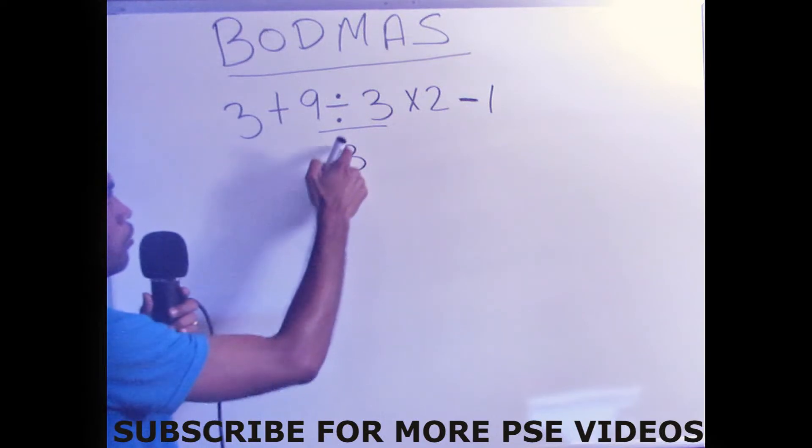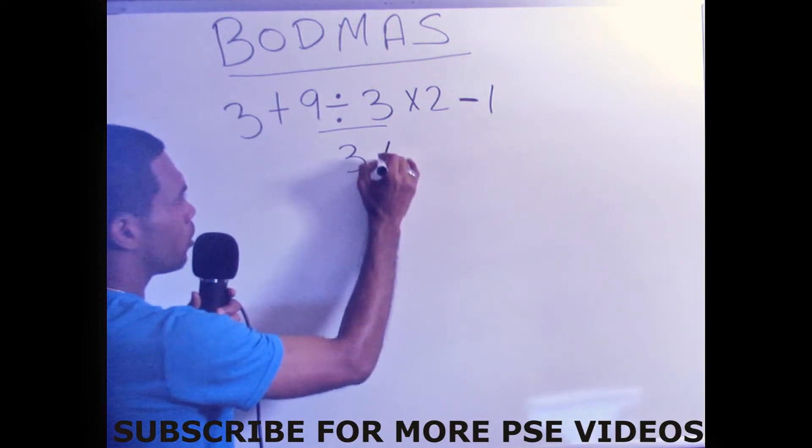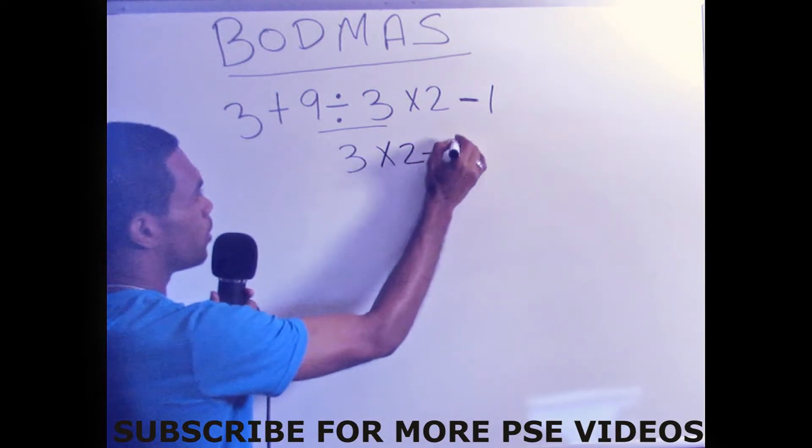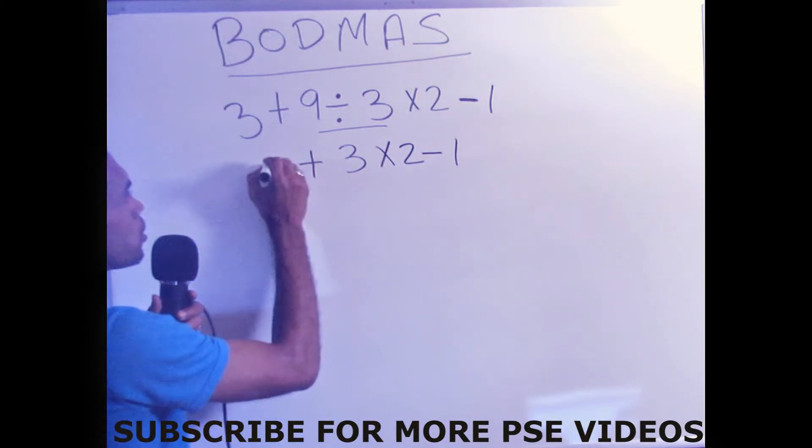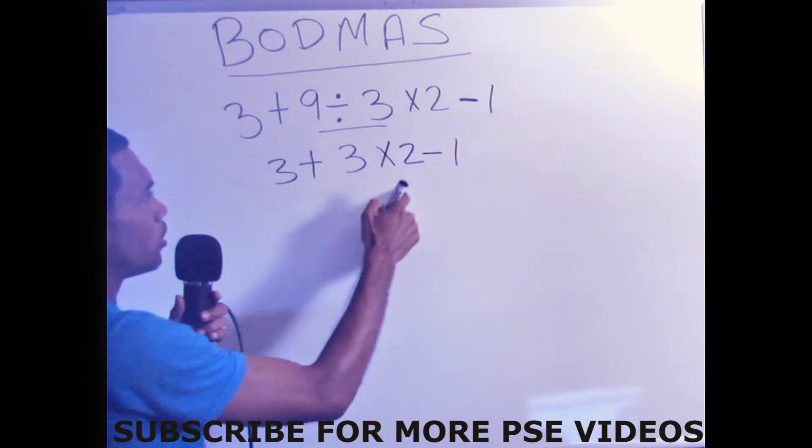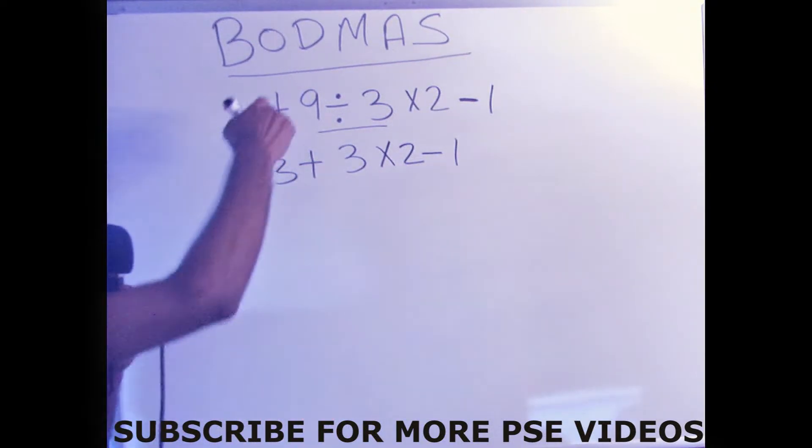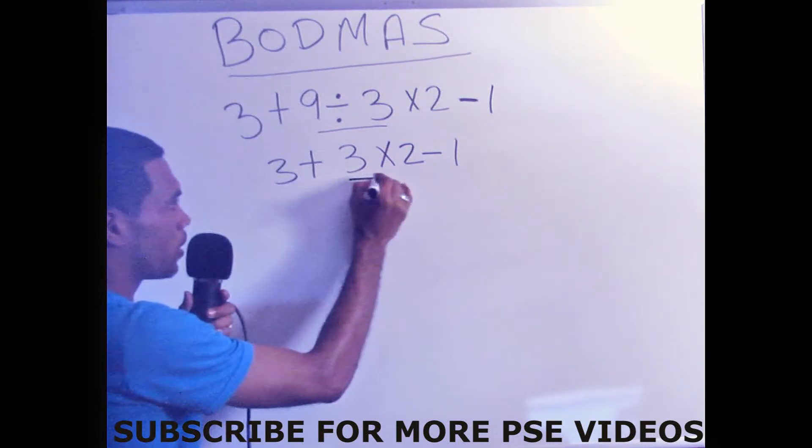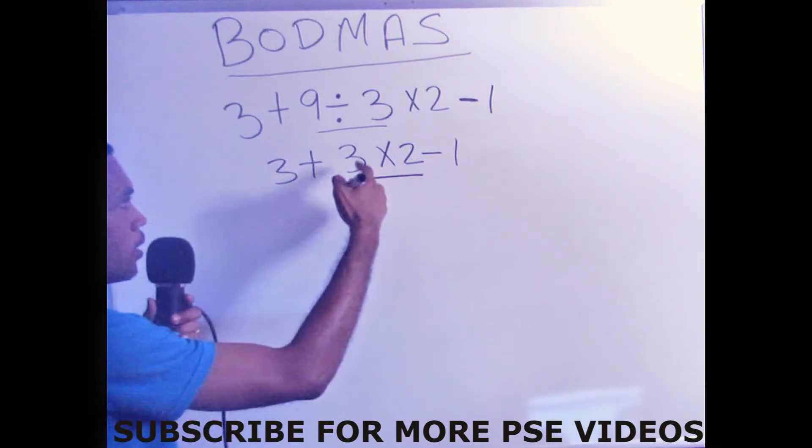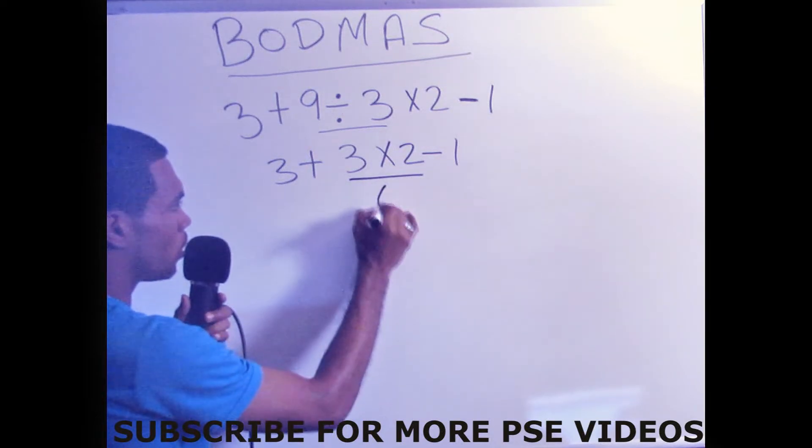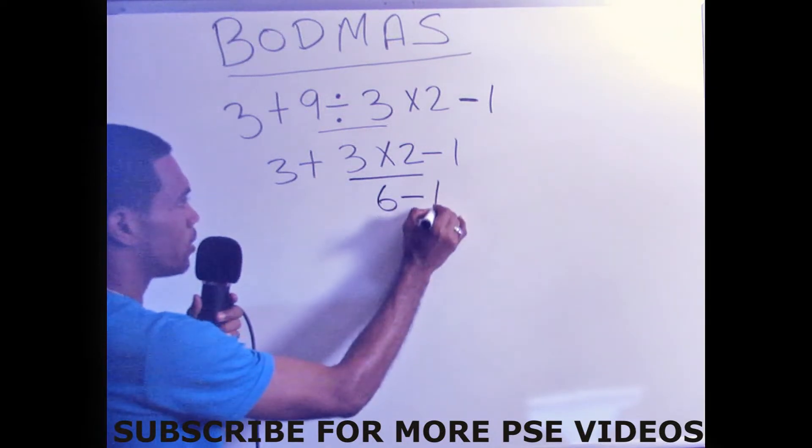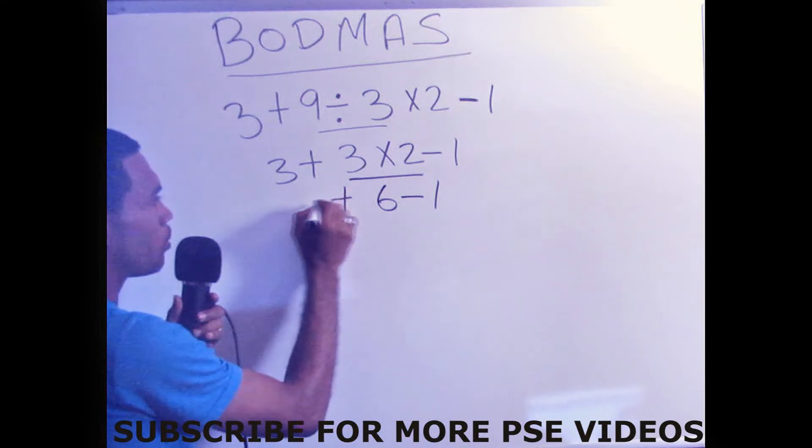So after we get 3 from 3 into 9, you bring on your times 2 minus 1 and your plus 3. So we bring these down. After we divide, we realize that there is a multiplication part, so we'll multiply, which is 3 times 2, which is equal to 6. Bring on your minus 1 and bring on your plus 3.